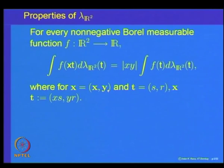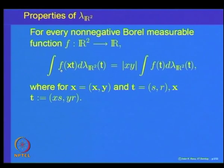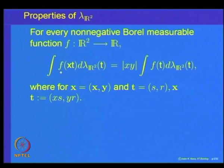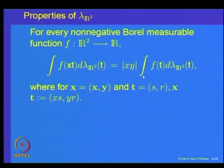Before proceeding, let me state the corresponding result for integrals. If f is a non-negative measurable function on R², then ∫f(x·t) dλ equals |xy| times ∫f dλ. So if you multiply the argument of f by a vector x, the integral changes by the factor |xy|. The proof is again an application of the simple function technique: first verify it for indicator functions using the set result just proved, extend to finite linear combinations, then to non-negative simple measurable functions, and finally apply the monotone convergence theorem for general non-negative measurable functions.